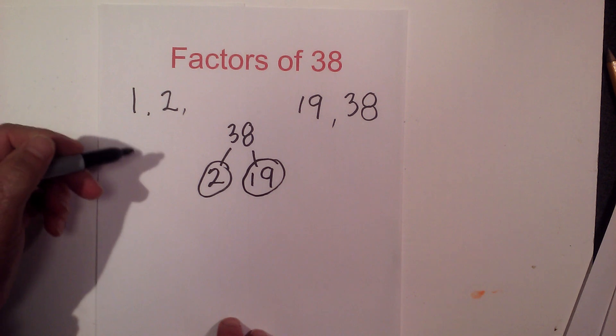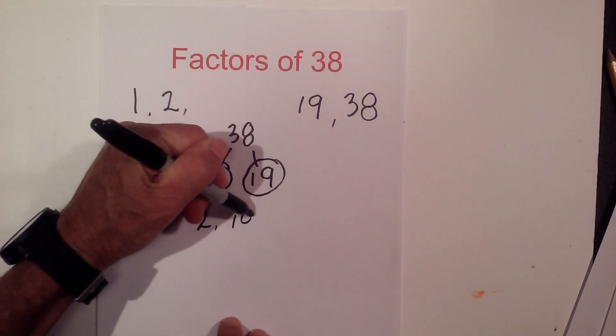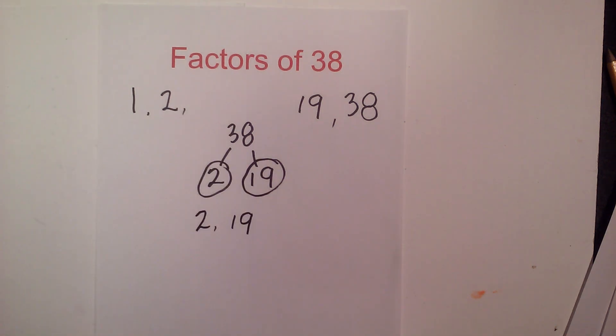So the prime numbers that multiply together to equal 38 are 2 and 19. Now let's tackle the multiples of 38.